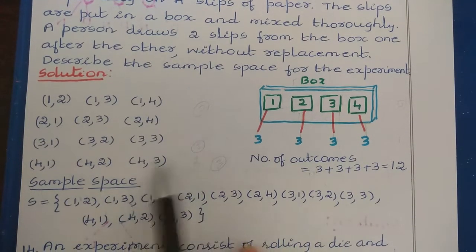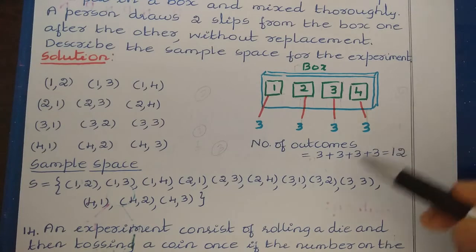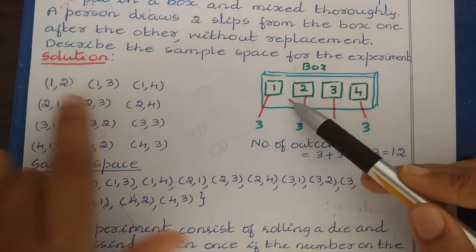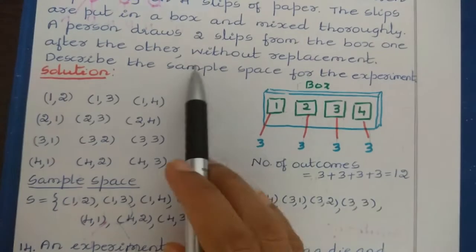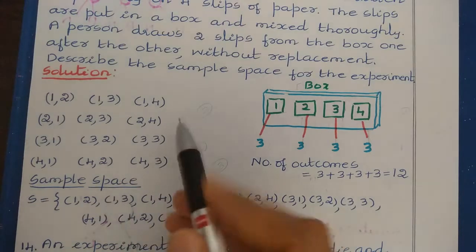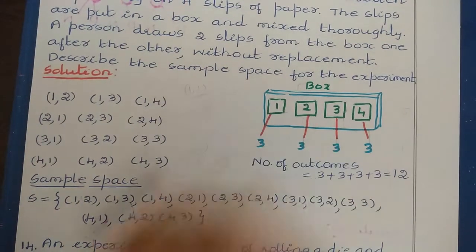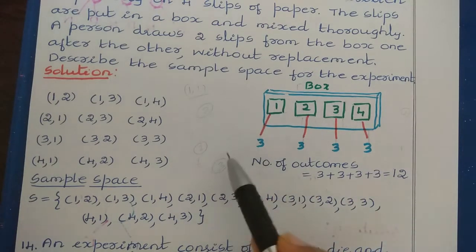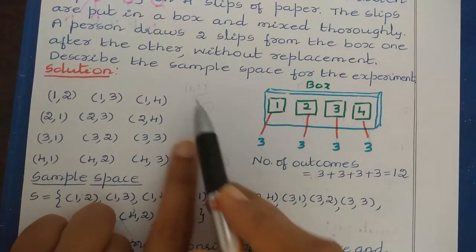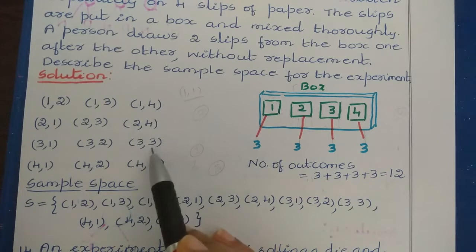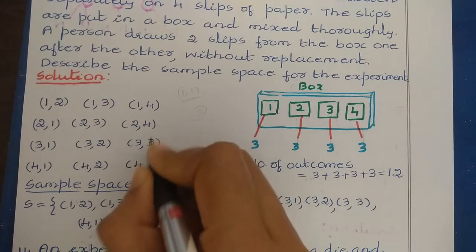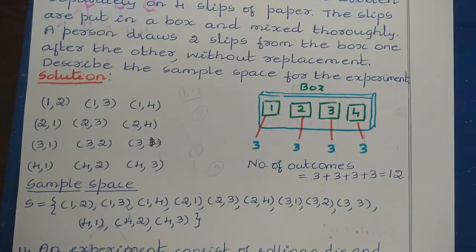So here the total number of outcomes is 3 + 3 + 3 + 3 = 12, because with each number we can have 3 possible outcomes. Note that they have specified this is without replacement. If it were with replacement, then we could also have the combinations (1,1), (2,2), (3,3), and (4,4), because after taking one number you could put it back and possibly draw the same number again.